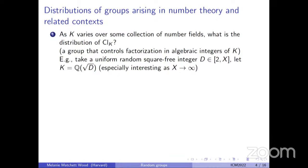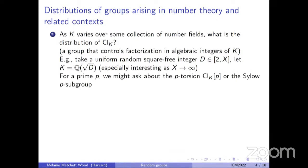All of these questions implicitly involve asymptotic distributions, though I won't focus on that aspect today. For a prime p, maybe we don't want to understand the whole class group — maybe we just ask about the p-torsion in the class group, which is a finite abelian group, an F_p vector space, or the Sylow-p subgroup. We can ask about smaller pieces of the class group, and in all these examples there's some distribution on groups of interest.